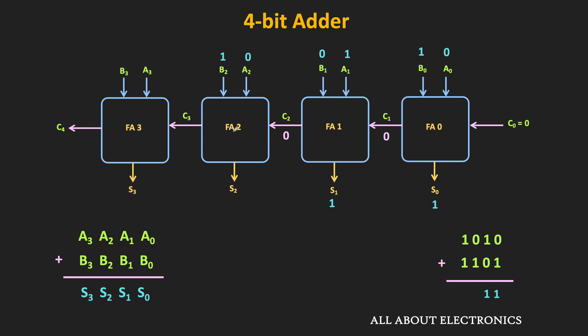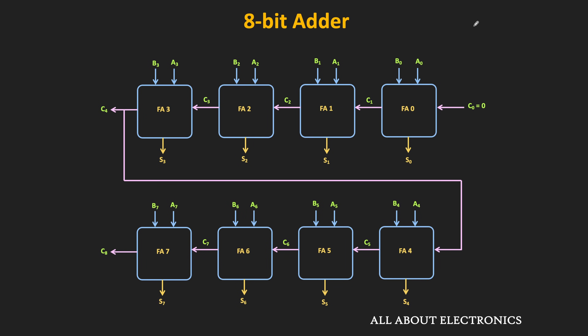For the third adder FA2, A2 = 0 and B2 = 1, with incoming carry C2 = 0, giving sum S2 = 1 and carry C3 = 0. For the last adder, C3 = 0, A3 = 1 and B3 = 1, so the sum S3 = 0 and carry C4 = 1. So using this four-bit adder we get sum bits 0111 with an outgoing carry of 1.